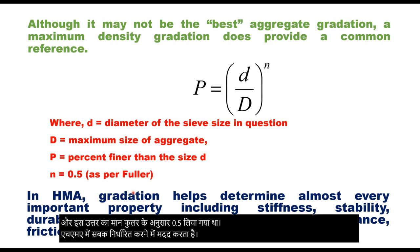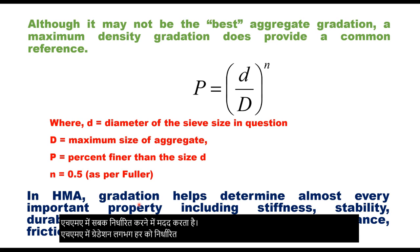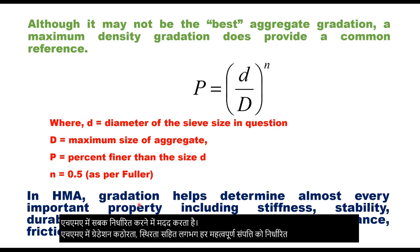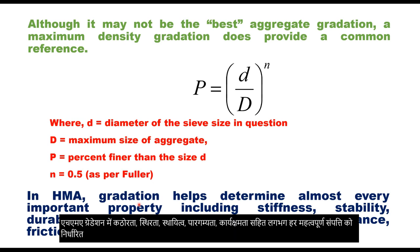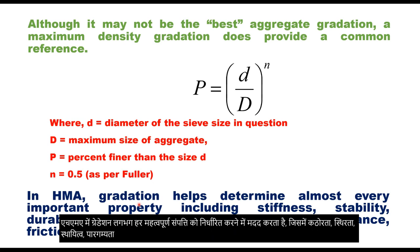In HMA, gradation helps determine almost every important property including stiffness, stability, durability, permeability, workability, fatigue resistance, frictional resistance, and moisture susceptibility.